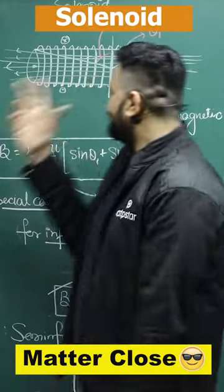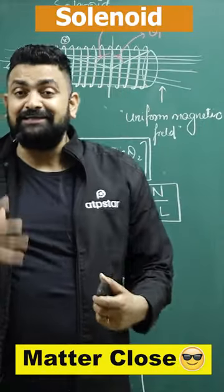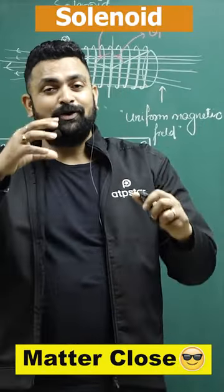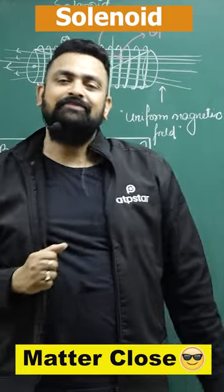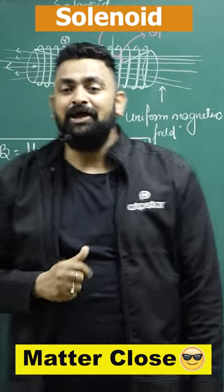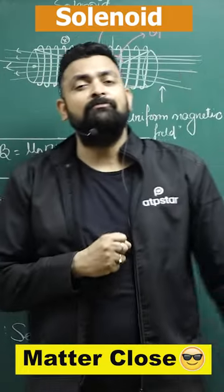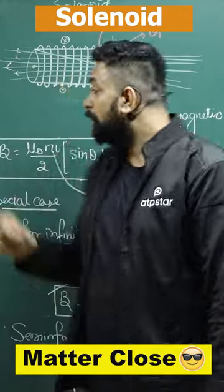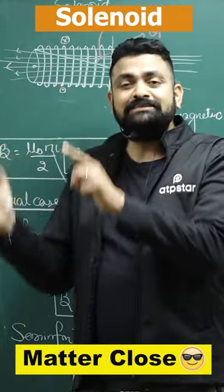That is called a solenoid. A solenoid is a device that produces a uniform magnetic field in its center. And the more you need a uniform magnetic field, the more you have to close the space between the two windings.